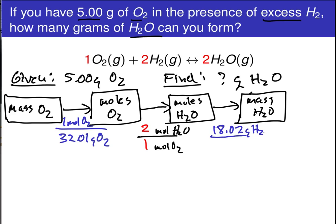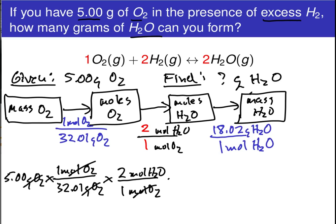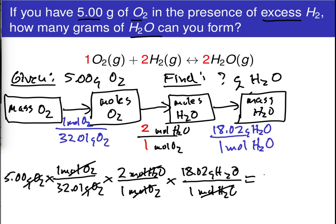Roughly 18.02 grams of H2O for every one mole of H2O. So putting all of this together, we start off with 5.00 grams of O2, use the molar mass to convert grams of O2 to moles of O2, use our stoichiometric coefficients to construct the conversion factor that takes us from moles of O2 to moles of H2O, and then finally carry out that last conversion from moles of H2O to grams of H2O, which gives a value of about 5.63 grams of water.